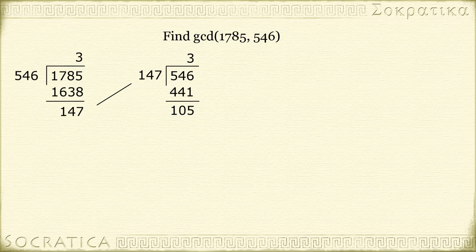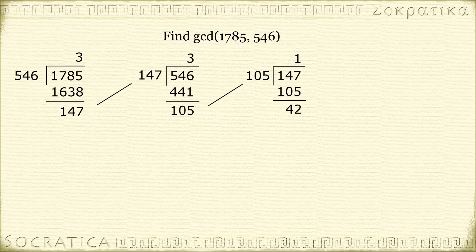Now we repeat this process. You take the previous divisor, 147, and you divide it by the previous remainder, 105. And here you get a quotient of 1 and a remainder of 42.